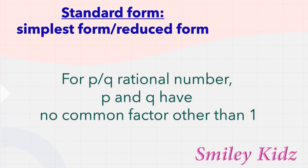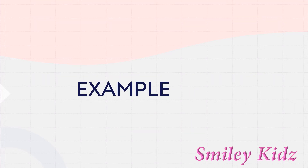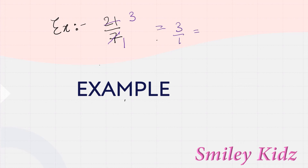Now let's talk about standard form. Standard form means simplest form or reduced form. For a rational number P/Q, P and Q have no common factor other than 1. To reduce any rational number into standard form, we need to divide its numerator and denominator by their HCF — highest common factor. Let's take 21/7. Converting it into standard form gives us 3/1, which is nothing but 3.